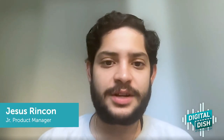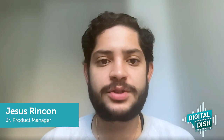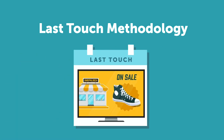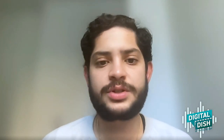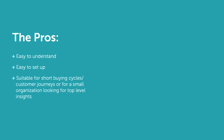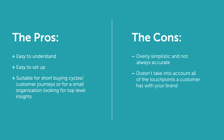We're going to review four different attribution methodologies as well as their pros and cons so you can be informed and ultimately choose the right one for your business. First, the last touch methodology — the most commonly used. Last touch refers to the last touch point a customer had interacted with before making a purchase, giving that last touch point the entire conversion credit. This isn't always accurate since it doesn't take into account all the touch points a customer might have had with your brand. The pros: this model is easy to understand, easy to set up, and suitable for short buying cycles or small organizations looking for top-level insights. The cons: it's overly simplistic and not always accurate. If you're working with a long buying cycle or want to understand how the customer goes from initial brand awareness through the funnel to becoming a customer, this methodology isn't for you.